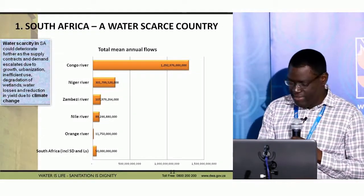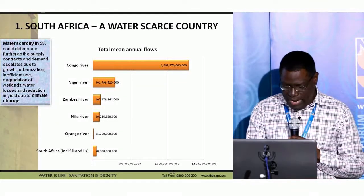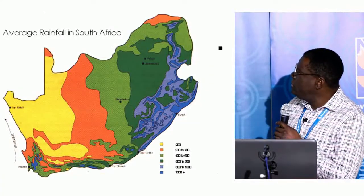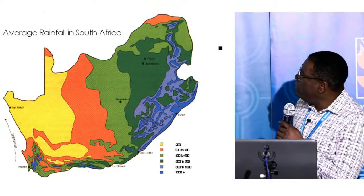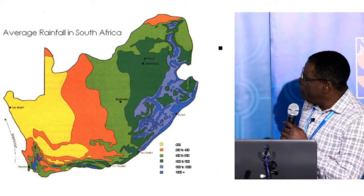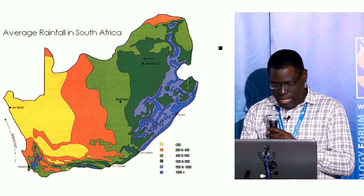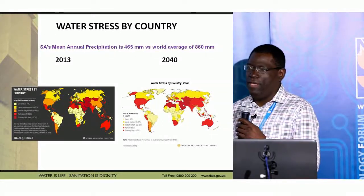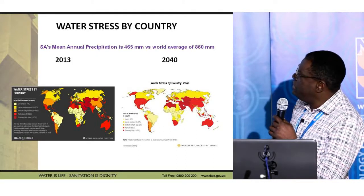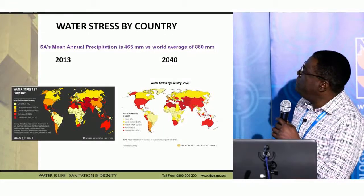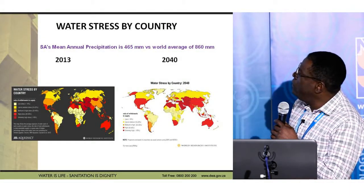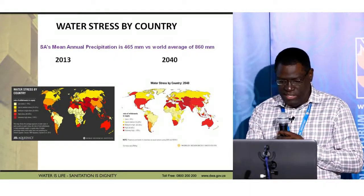We are a water scarce country and there is no running away from that. In terms of our planning, that is one of the key considerations, along with the spread of that water. You can see the rainfall distribution — high rainfall areas, low rainfall areas, and high evaporation in certain parts, slightly lower evaporation in others. Our mean annual precipitation is 465mm versus a world average of 860mm. Looking at where we are going, we will see more water stress in the country as we move along.